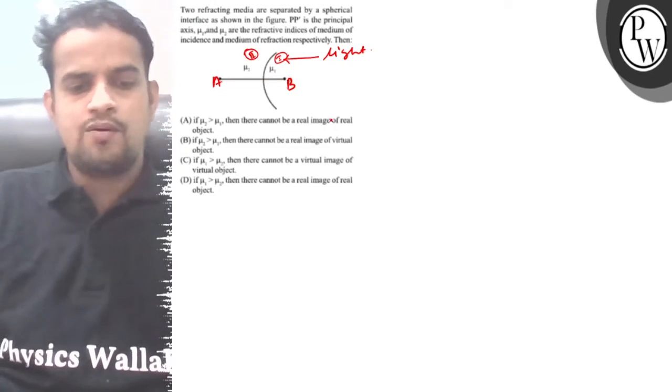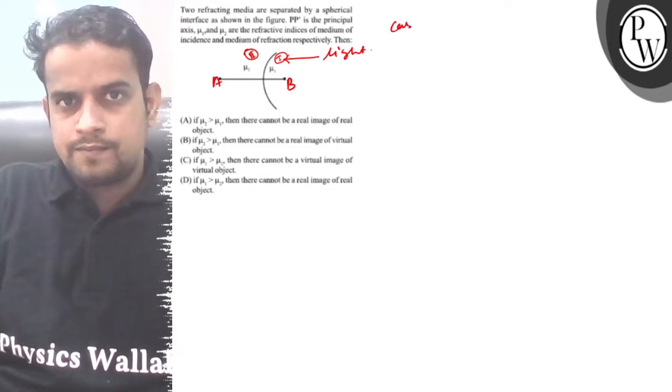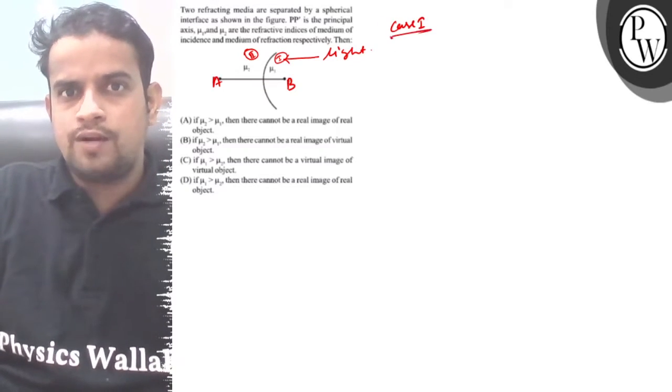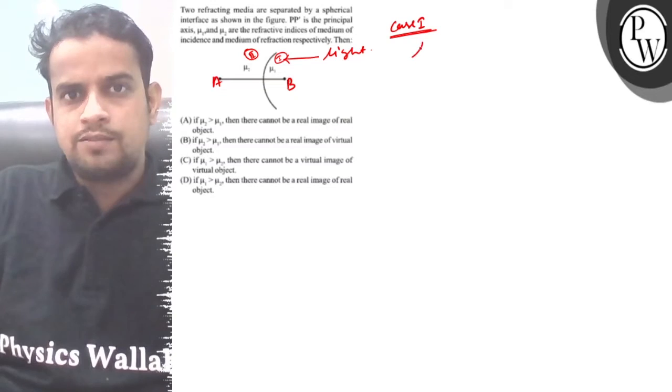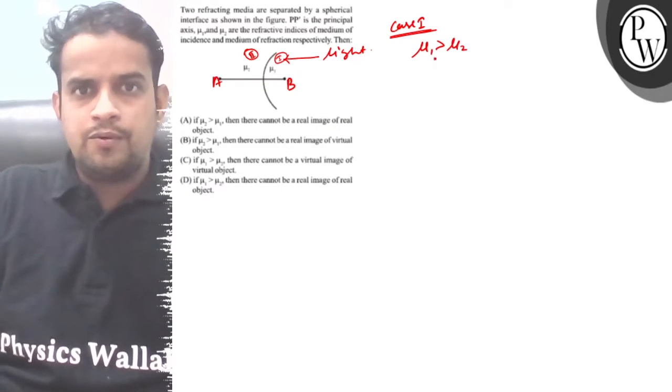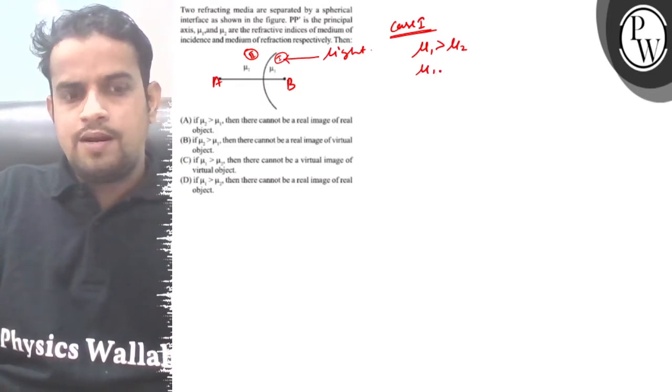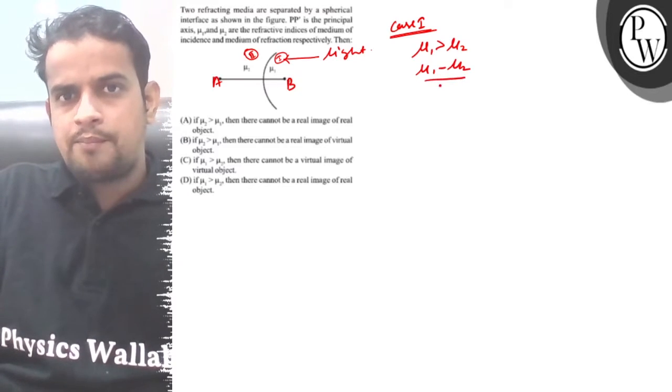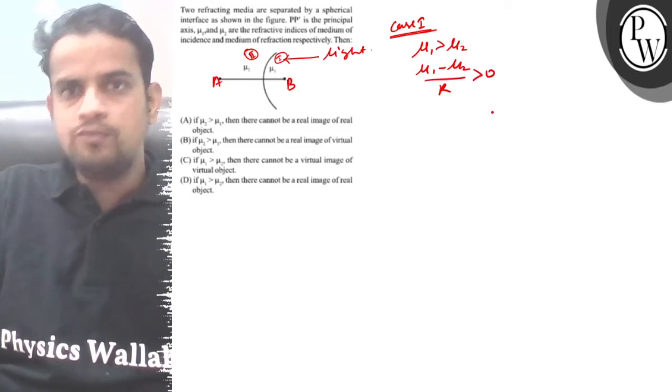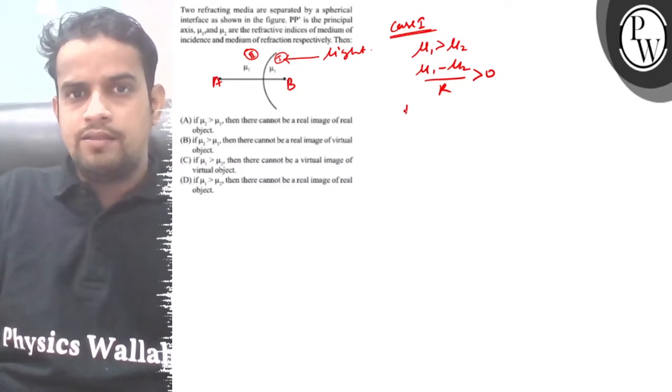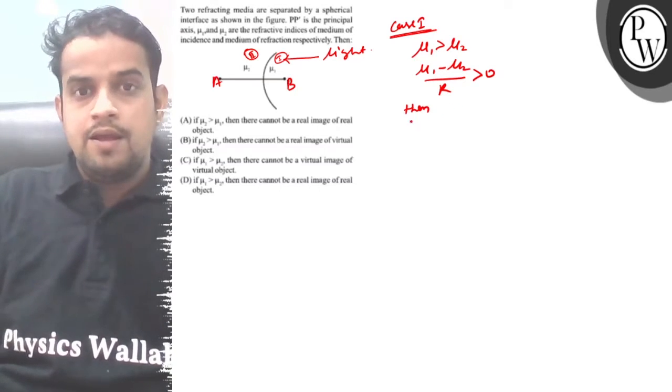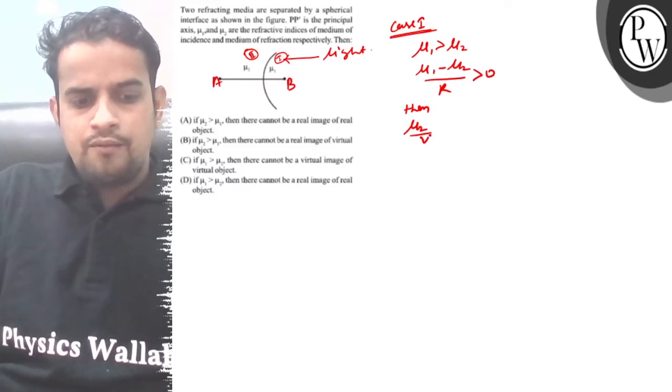Case first: μ₁ maximum condition, μ₂, μ₁ minus μ₂ upon r is greater than zero. Then μ₂ upon v minus μ₁ upon u is greater than zero.